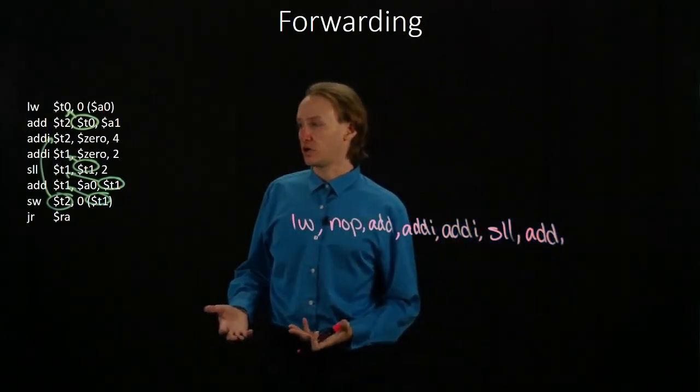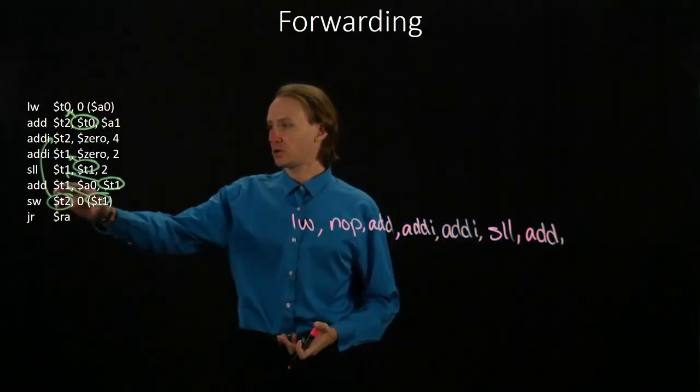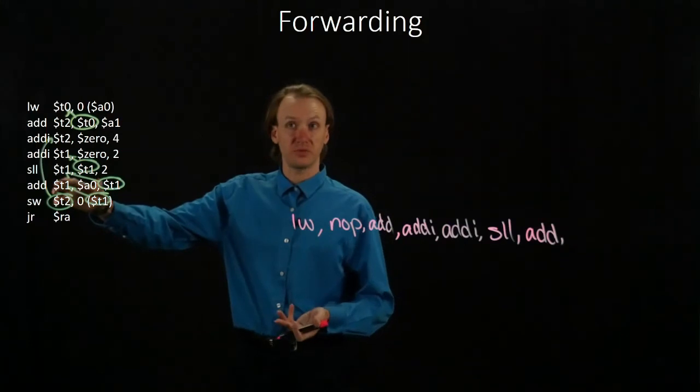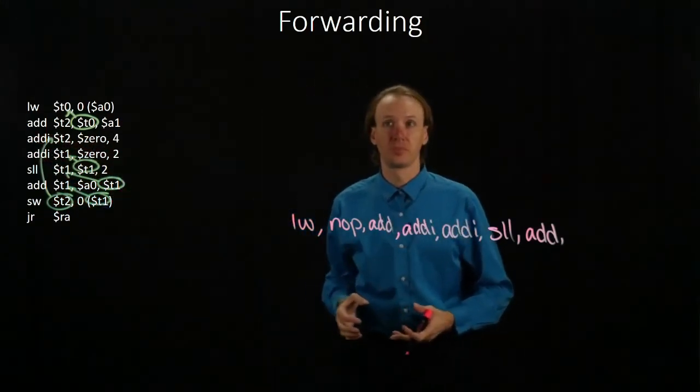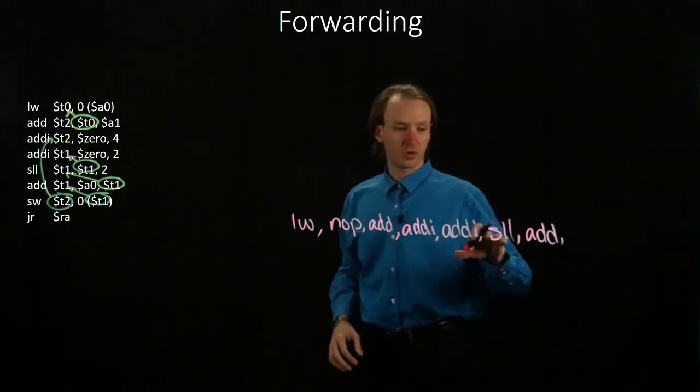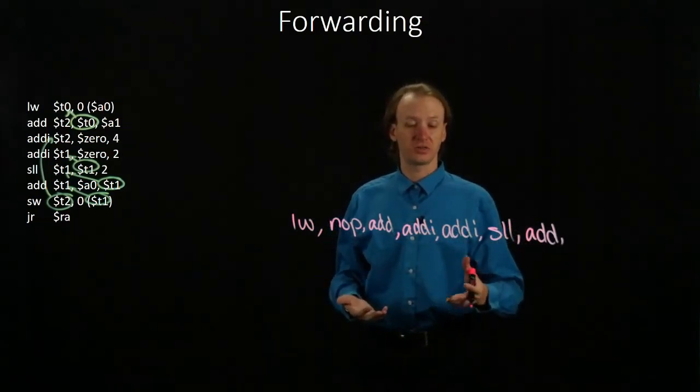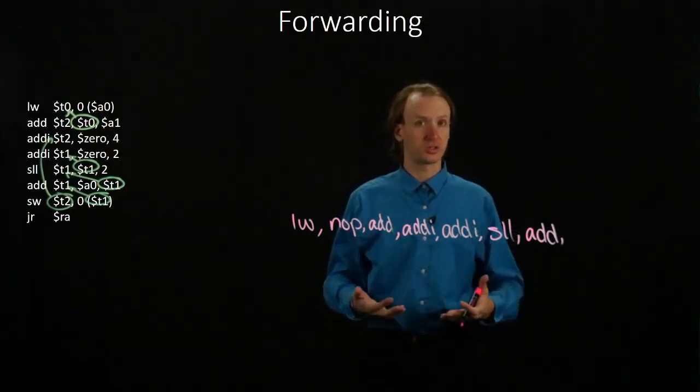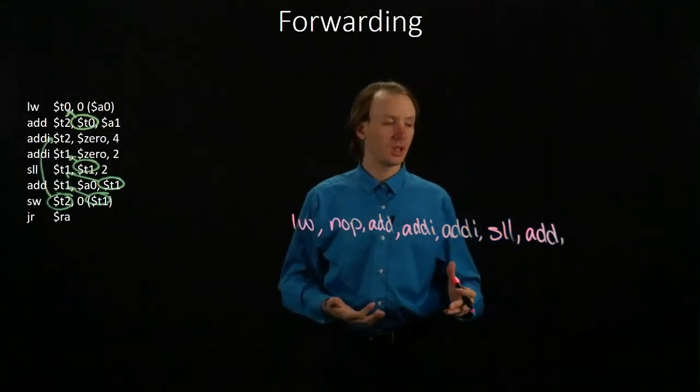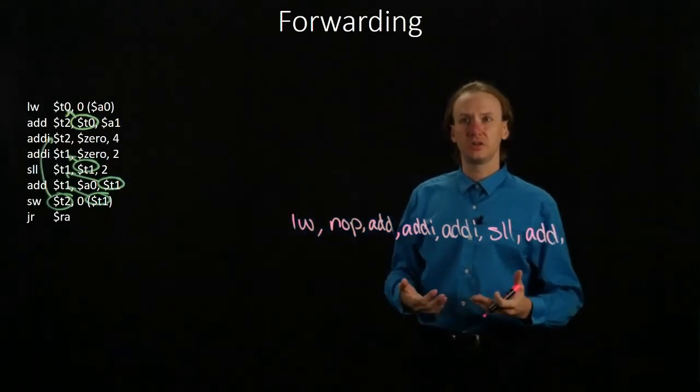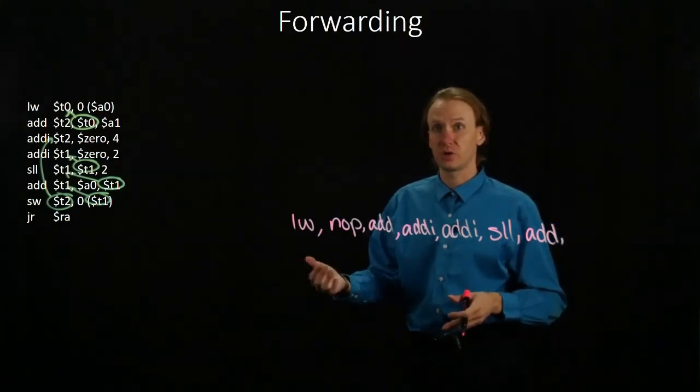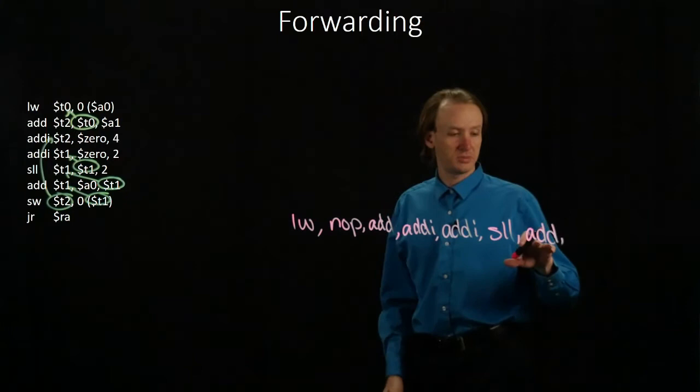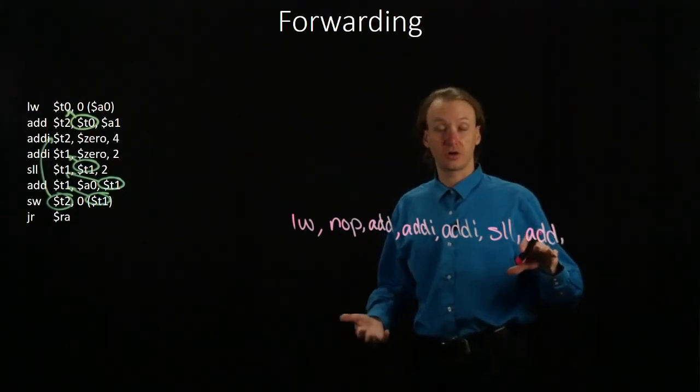Now I've got a store word instruction. It depends on both the add instruction before it, as well as the first add immediate instruction. It's been more than two cycles since that add immediate instruction ran, so I know those results have been committed back to the registers. But I'll need to use T1 in the third stage, because I need to add zero to it, so I need to be sure that the results of my add instruction are available.